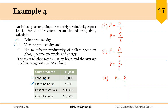First we calculate labor productivity. Productivity is output over input. The output is 100,000 units produced this month, and the input for labor is 10,000 hours. So the productivity is 10 units per labor hour.